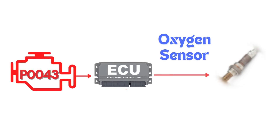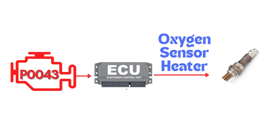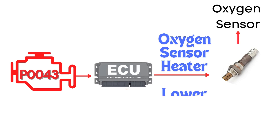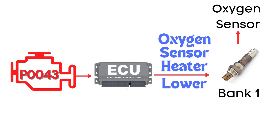This code gets triggered when the engine control module detects that the voltage in the heater circuit of the oxygen sensor is lower than expected. Specifically, we're talking about the oxygen sensor heater circuit for bank 1 sensor 3.